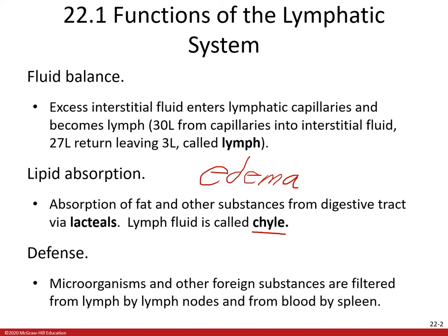The third function is defense. This is where we have microorganisms and other foreign substances being filtered from lymph by lymph nodes and from the blood of the spleen. This is where we get things like lymphocytes. Lymphocytes are one of those white blood cells — a type of immune system defense cell. Many infectious diseases produce symptoms associated with the lymphatic system, and that is where these cells come in handy.